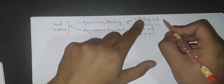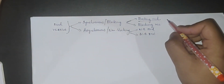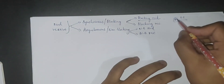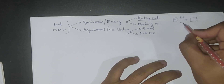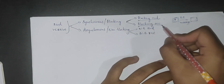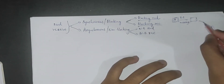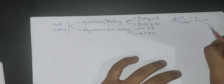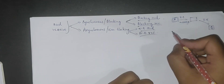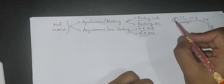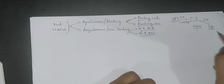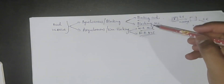A blocking send means the sending process is blocked until the message it sent is actually received and consumed by another process. A blocking receive means the receiving process is blocked until it actually receives a message — it cannot receive an empty message. In contrast, non-blocking send allows a process to keep sending messages without waiting, and non-blocking receive can either receive a message or receive none if no message is available.